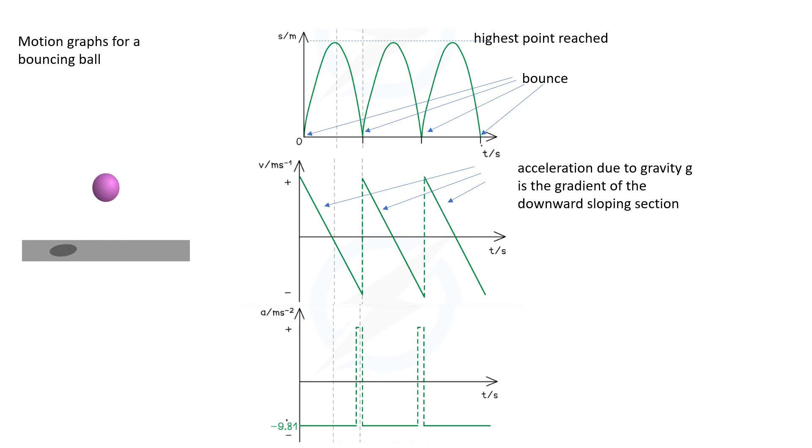And the acceleration time graph should look something like this with a negative acceleration here which is when the ball is in flight. There's a constant negative 9.81 meters per second squared, which is our value of g.